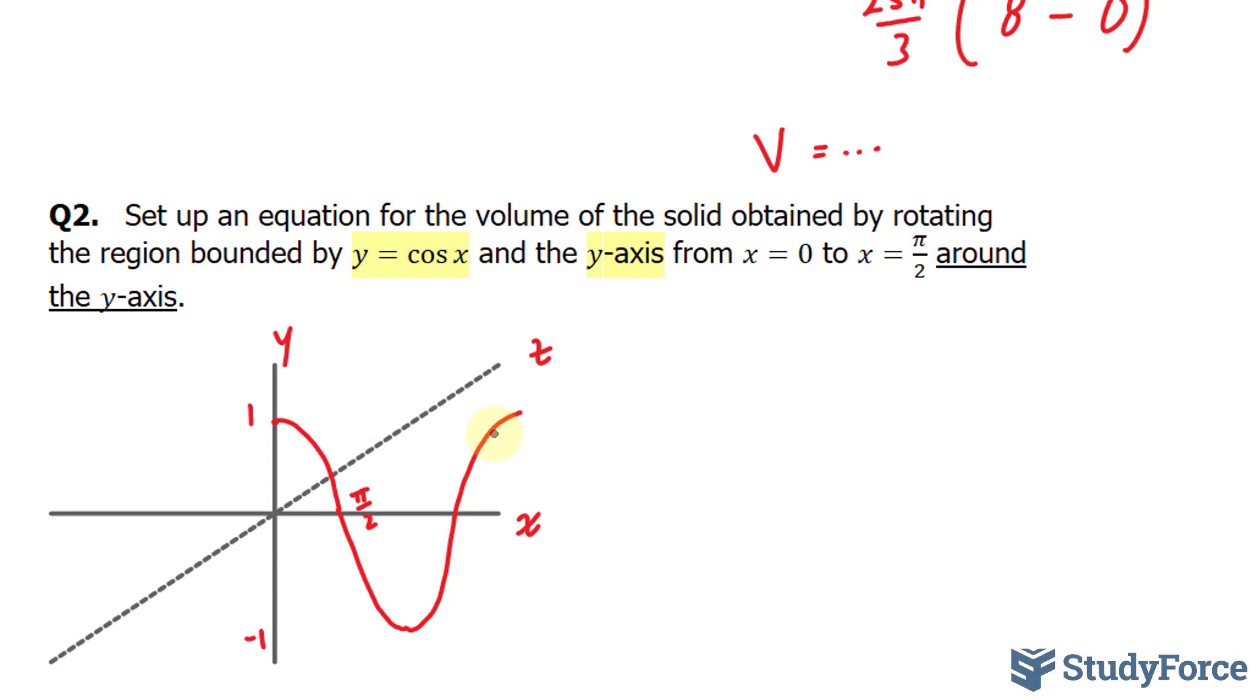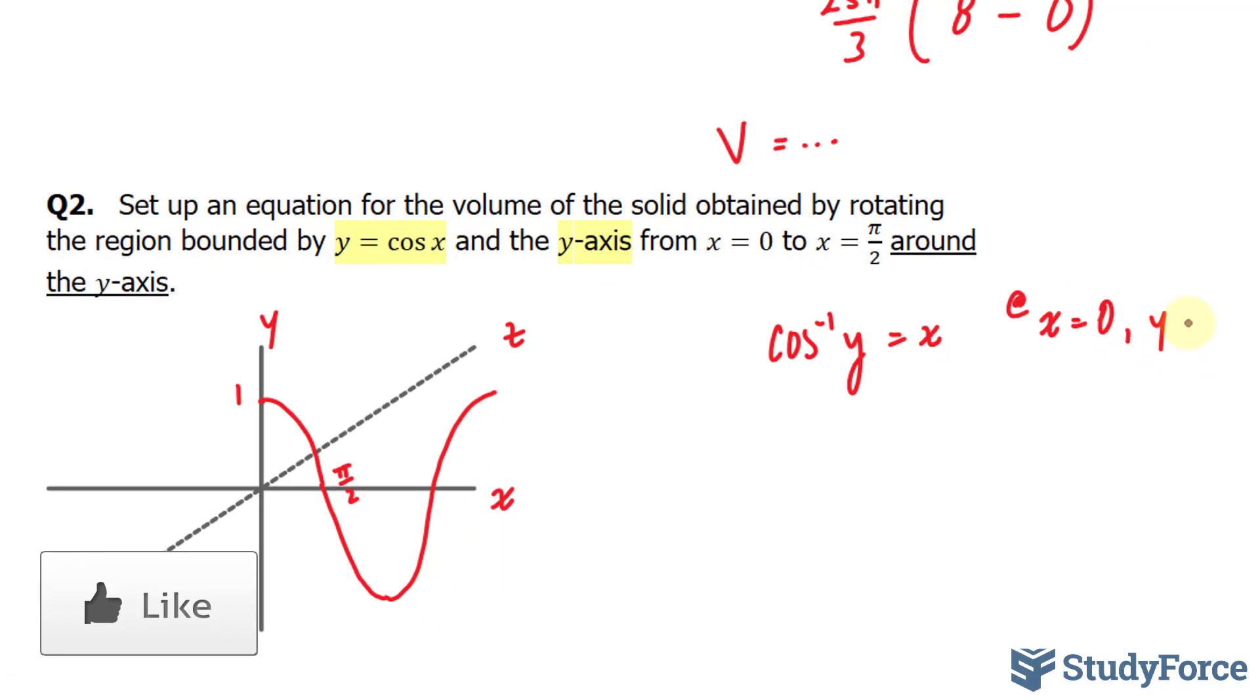Our function right now is in terms of x. So to make it in terms of y, I need to take cosine inverse of y, and now it's in terms of x. And the bounds that we were given were in terms of x as well. We have to convert them in terms of y. x at 0 is 1. So at x is equal to 0, we have y is equal to 1. And at x is equal to pi over 2, we have y is equal to 0.